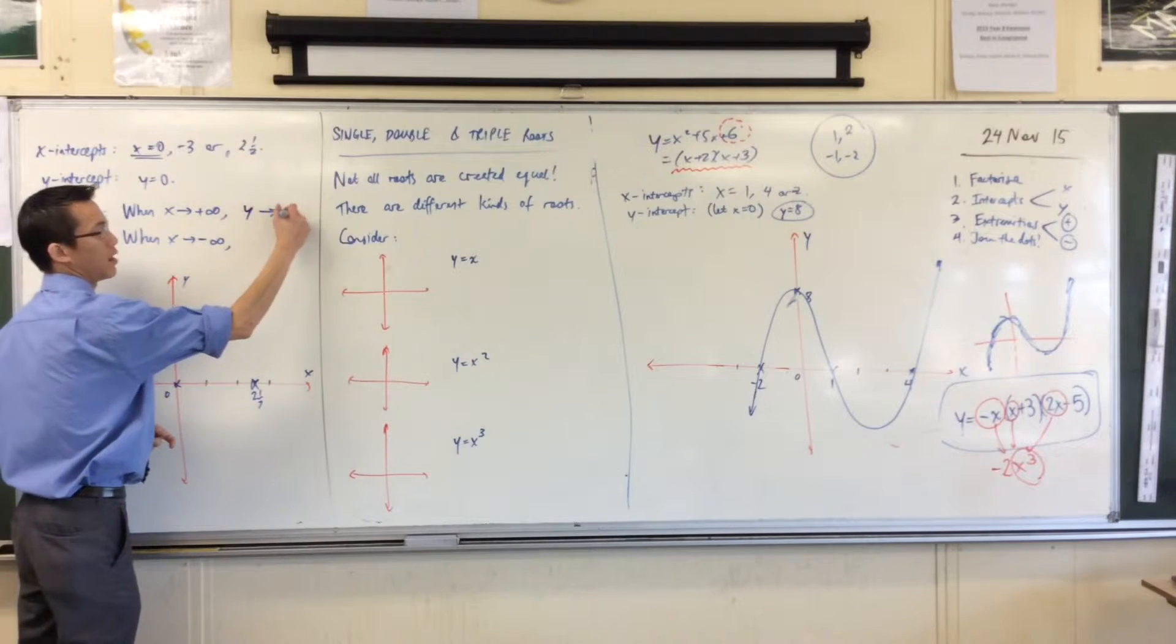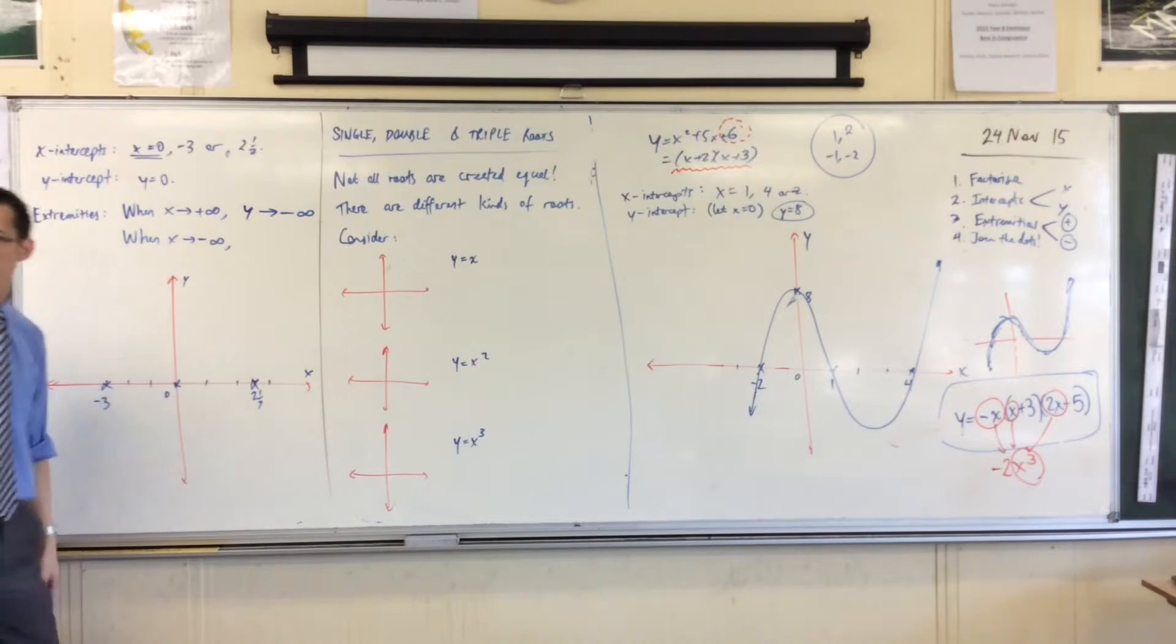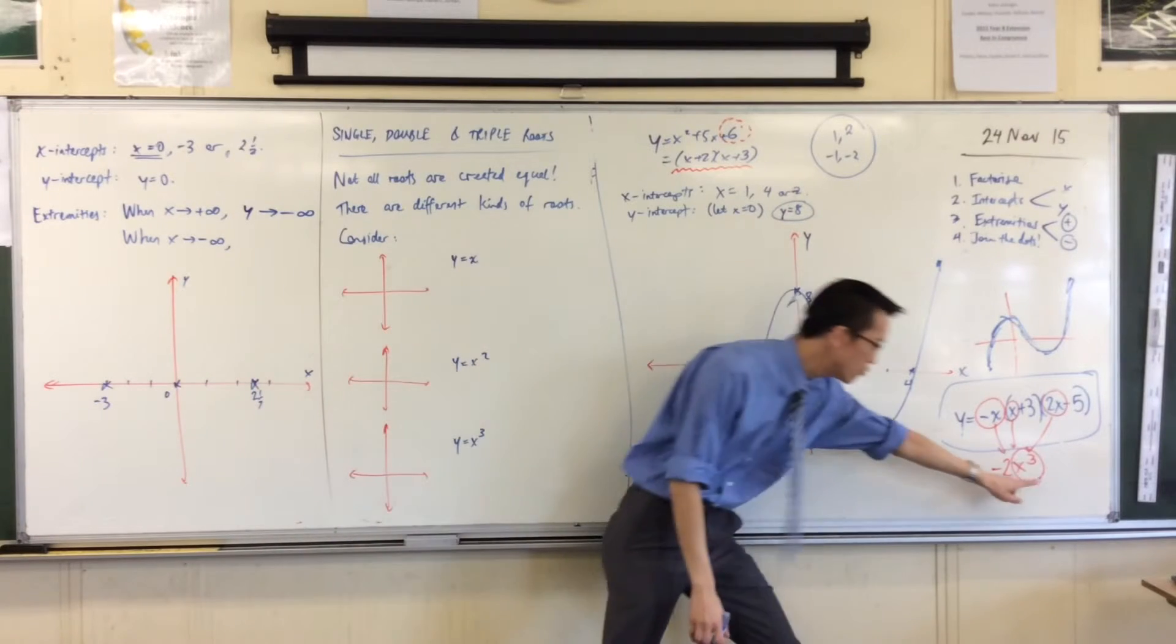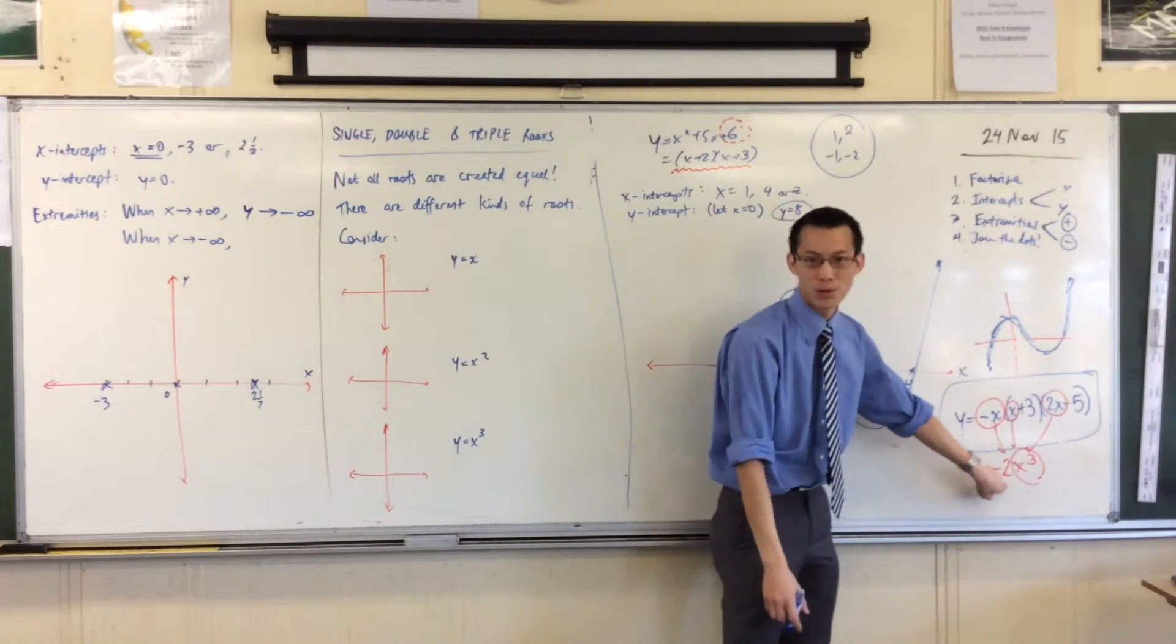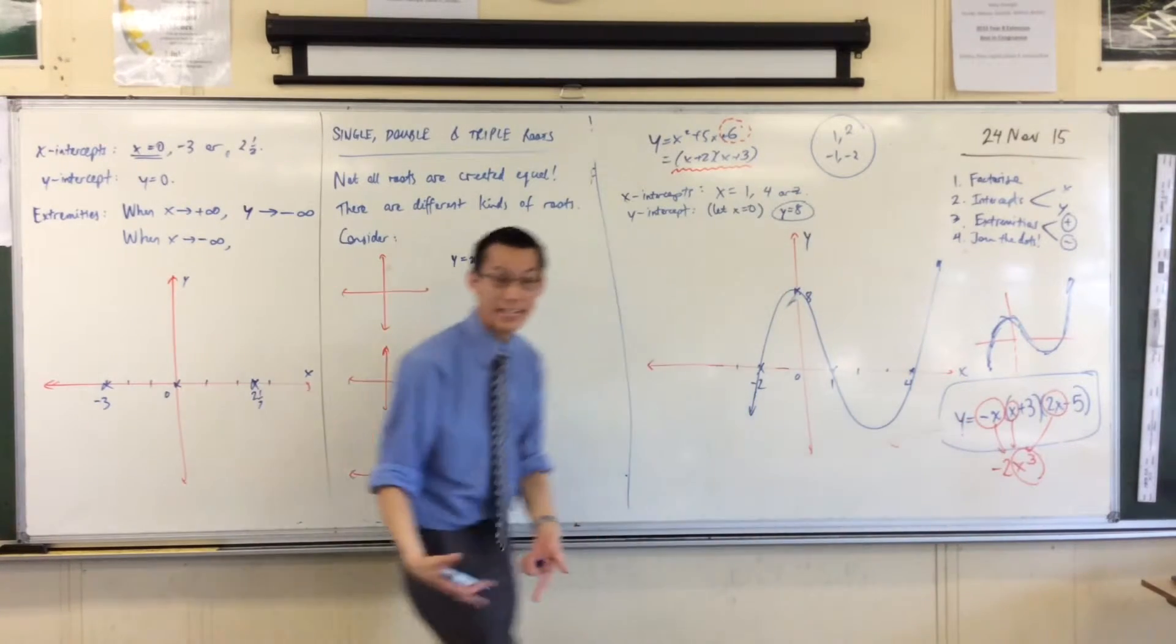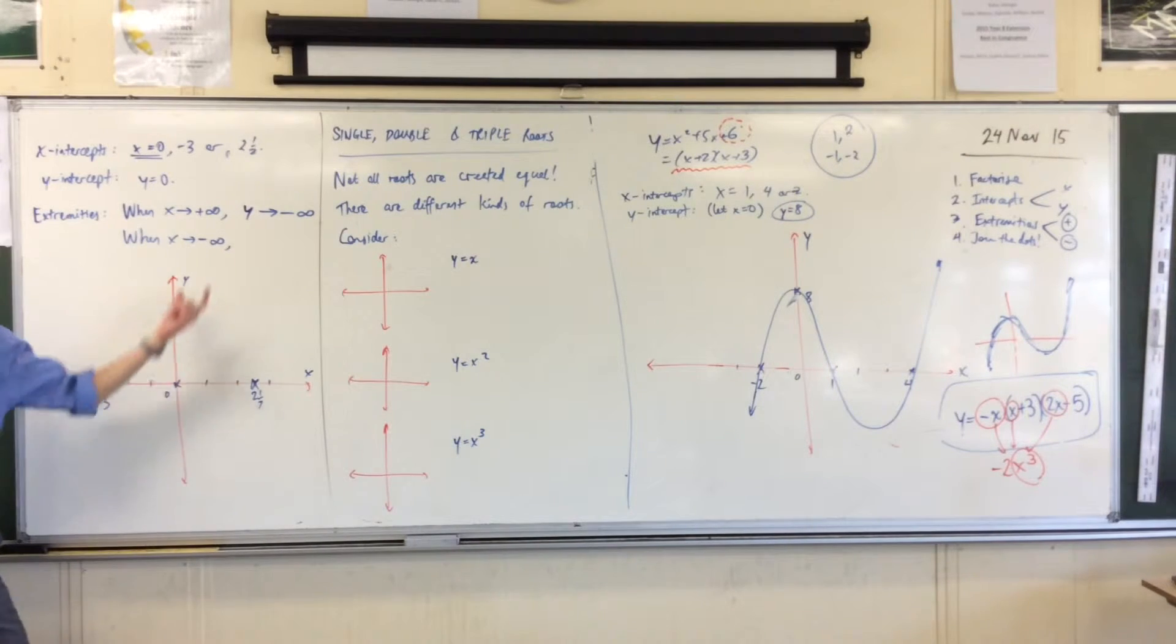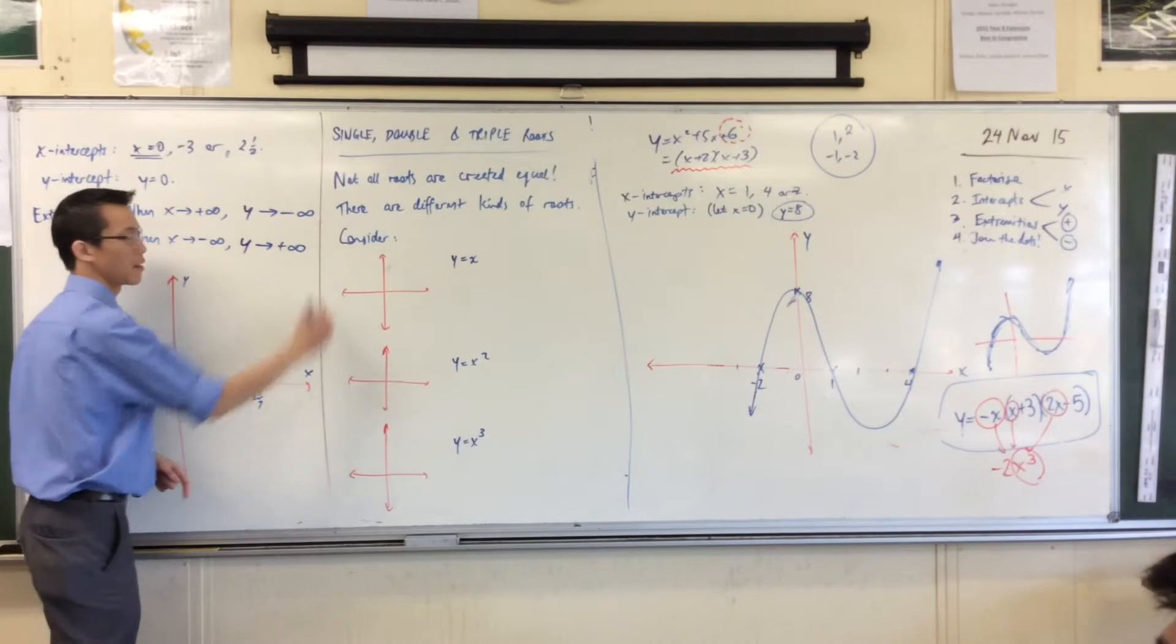What's y doing? Well, it's getting really, really negative. Do you see that? Like, x is huge, but minus 2 times x cubed is really negative huge, okay? It doesn't take too much thought to see. When you do the opposite, the opposite thing will happen.